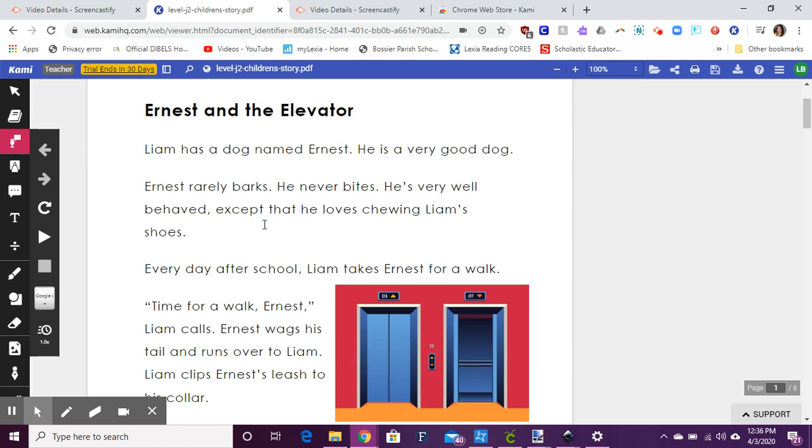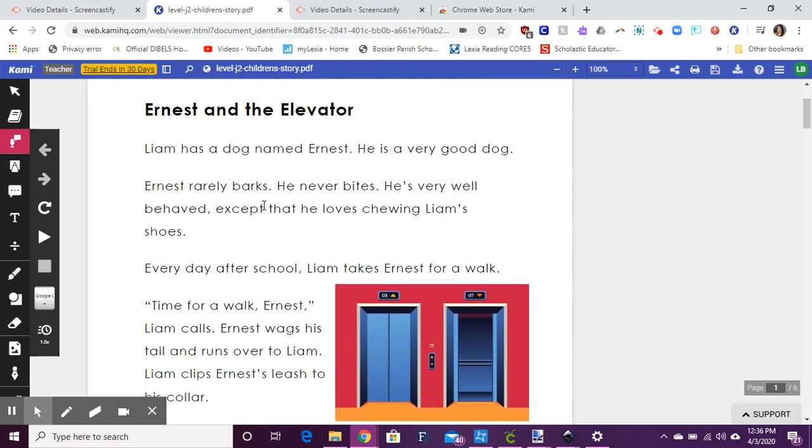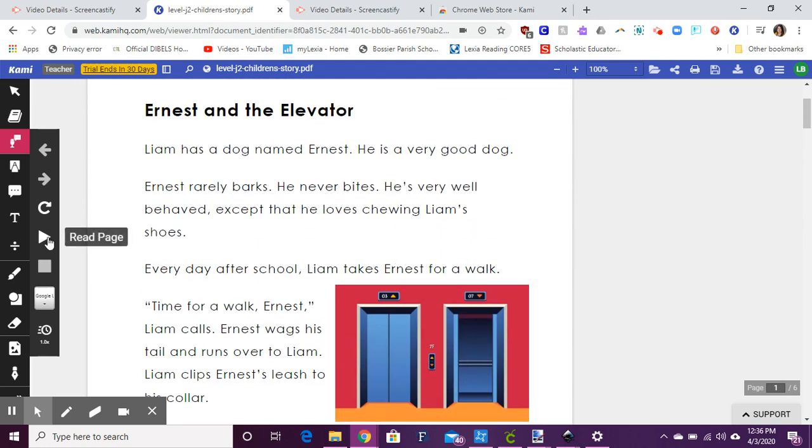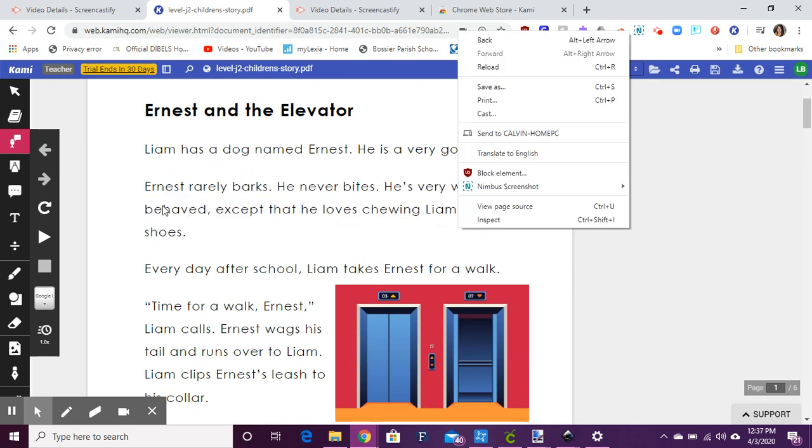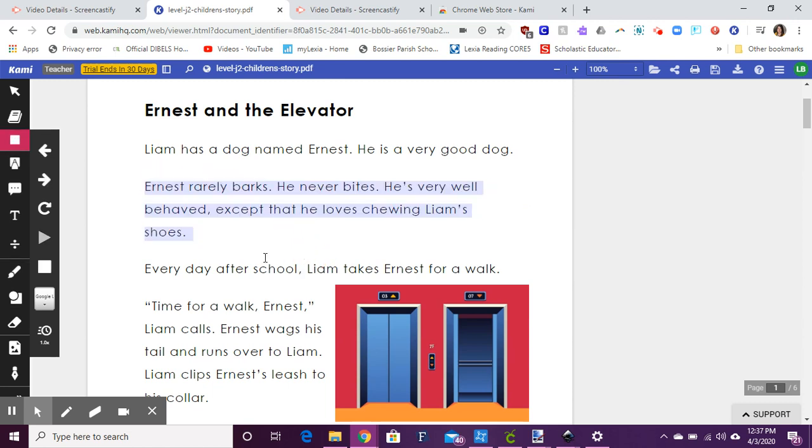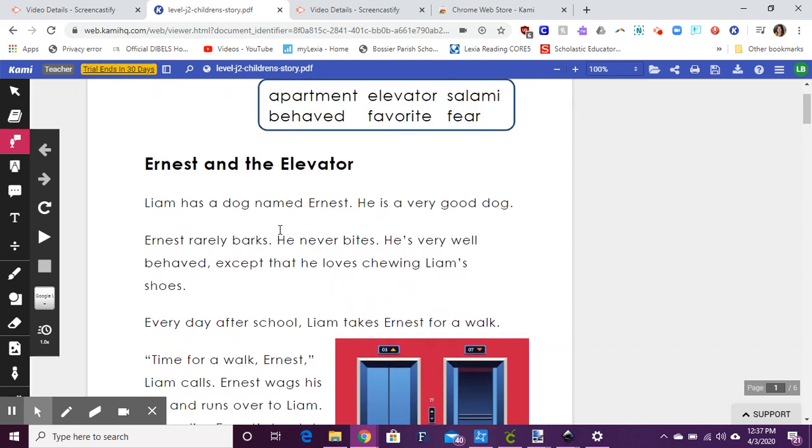So for instance if I wanted to read this page I would just click play, but say I wasn't sure maybe what this word was, I would double click that word and it's gonna tell me what that word is. Say I wanted to read this whole paragraph, I'm gonna click and drag my mouse so it highlights that whole paragraph and when I let go it's gonna read the whole paragraph. So you can use that for any part of the document that they give you.